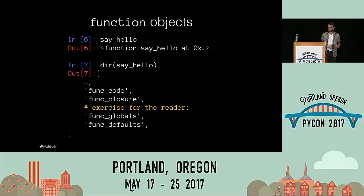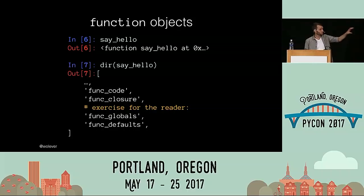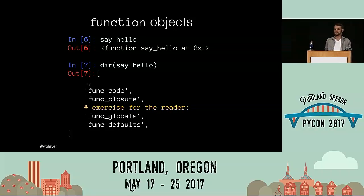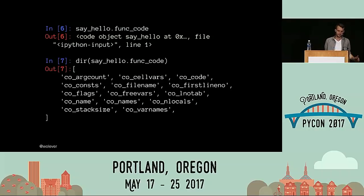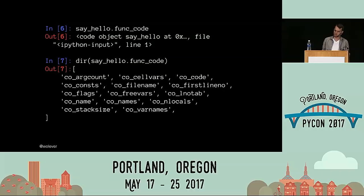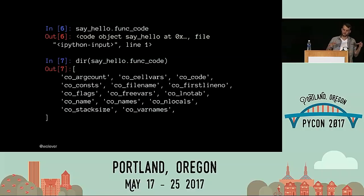Just like everything else in Python, functions are objects with a bunch of attributes, and we can use the dir built-in to list those attributes. There's a whole bunch of fascinating stuff in there — after this talk, you should pull out an interpreter and dig in. For now, we're just going to focus on func_code, or __code__ in Python 3. func_code is the object that describes the actual code associated with the function — it's got the function name, the file it was defined in, and even the line number. Within func_code there's a lot of cool stuff, and you can probably do some pretty disgusting tricks there.